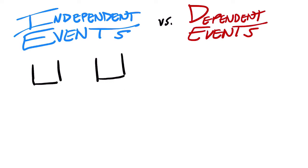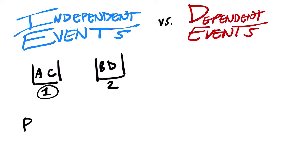These are buckets, and inside the buckets are letters. Let's put A and C in the first bucket, and B and D in the second bucket. Now let's say you're playing a game where you pick out letters from the buckets. Assume you have to start at bucket one and then go to bucket two.